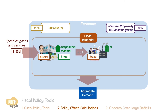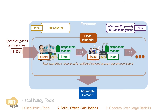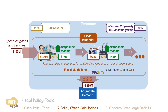This cycle continues until the effect reaches a limit. So as you can see, the total amount of spending in the economy extends beyond just the $100 million that the government put in. The fiscal multiplier can be calculated using this formula. So for this economy, the fiscal multiplier is 2.5. This means that the additional $100 million the government spent can potentially result in a $250 million increase in aggregate demand.